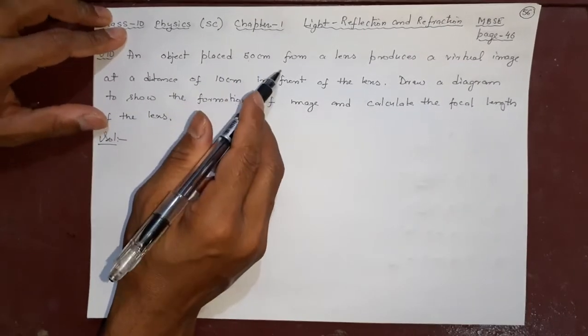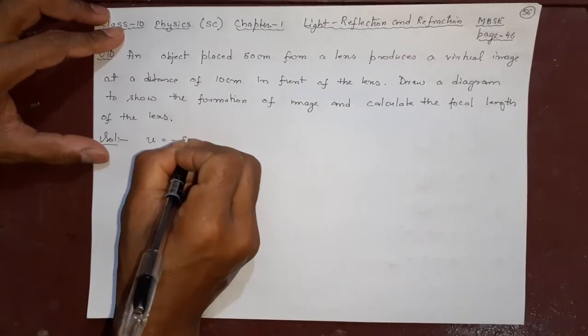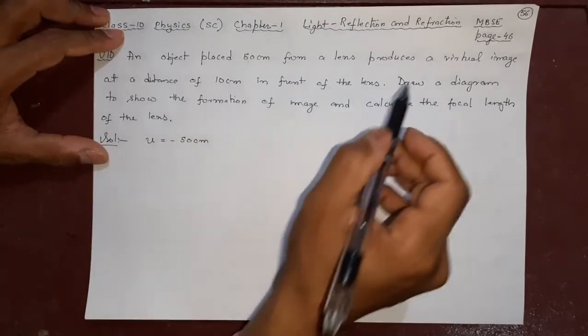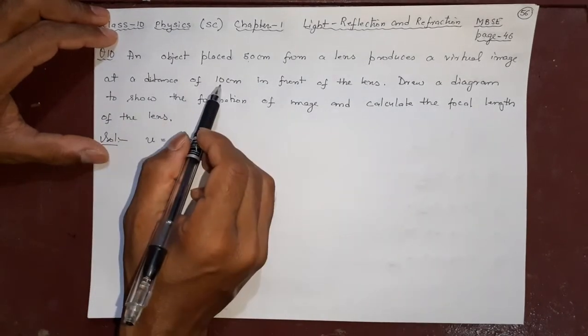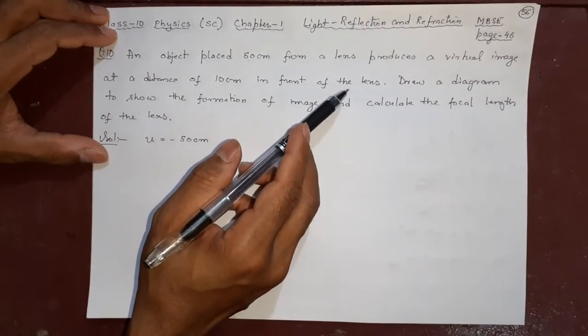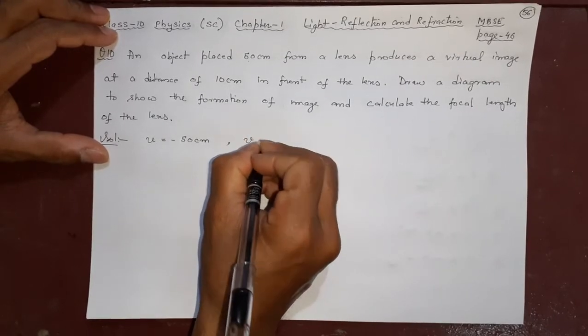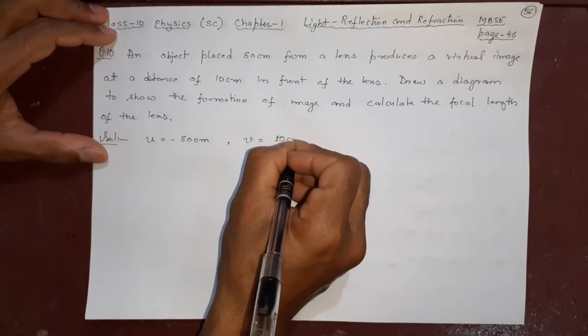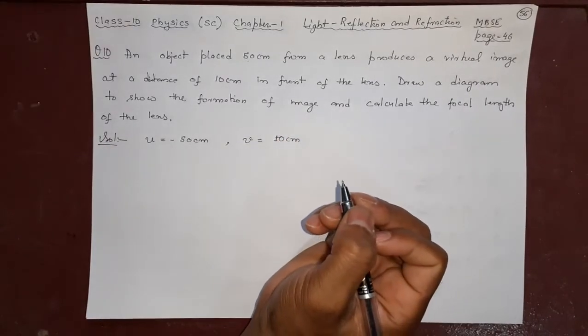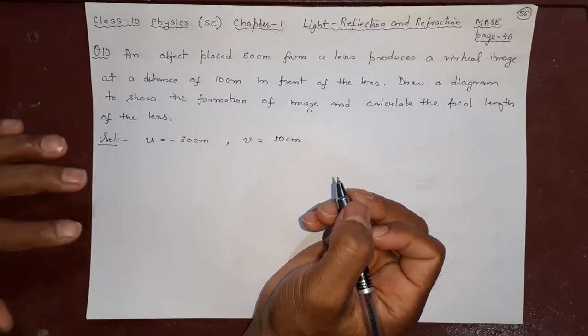An object placed 50cm from a lens, object distance is minus 50cm, produces a virtual image at a distance of 10cm in front of the lens. Its image is 10cm in front of the lens, that means on the left side. It is a virtual image.